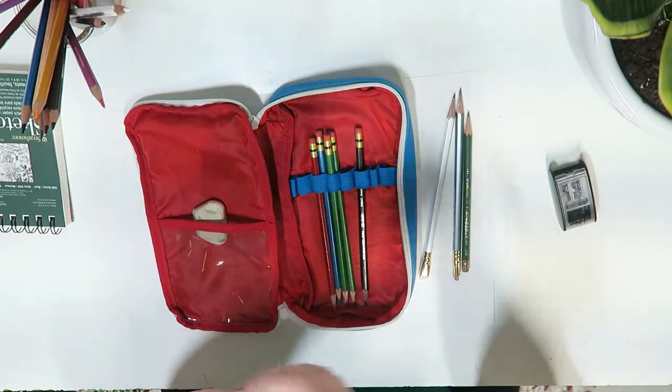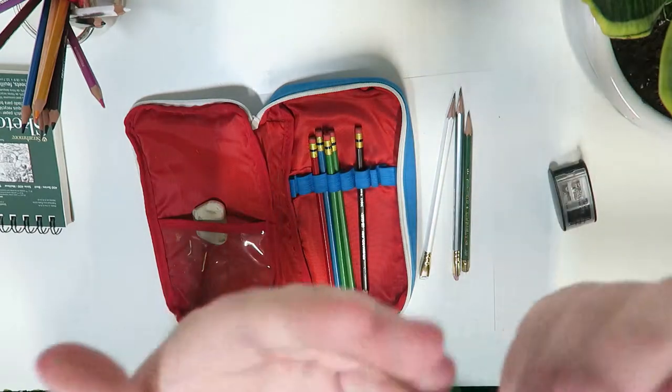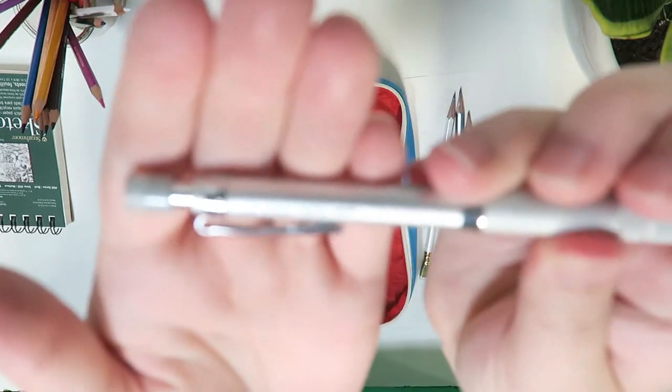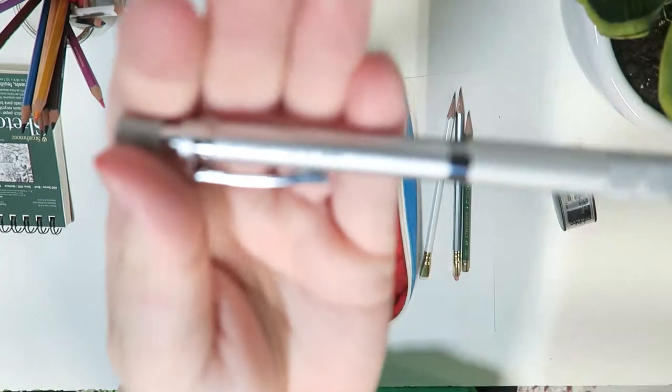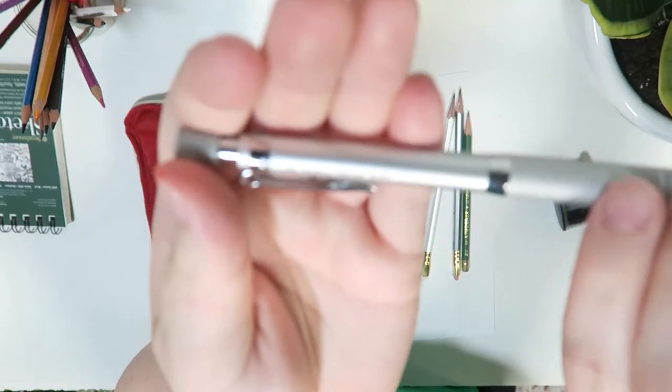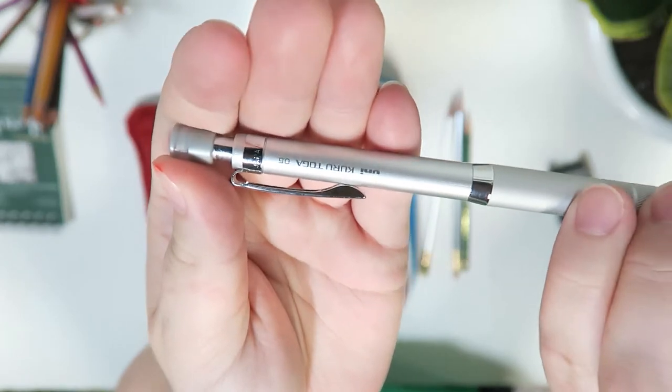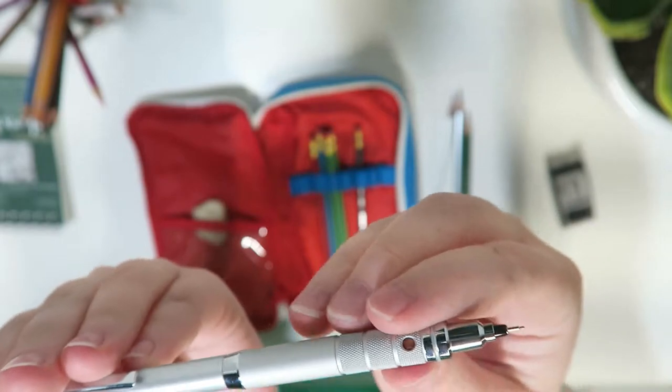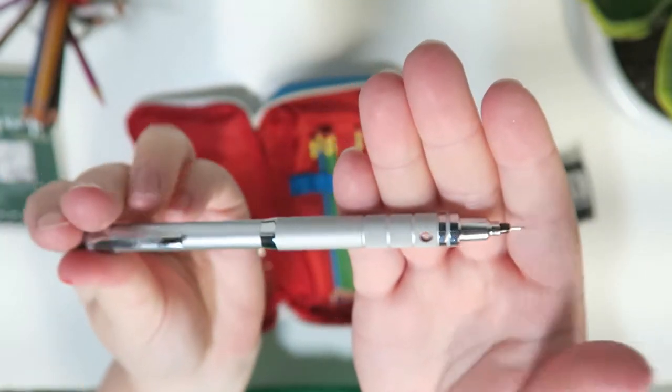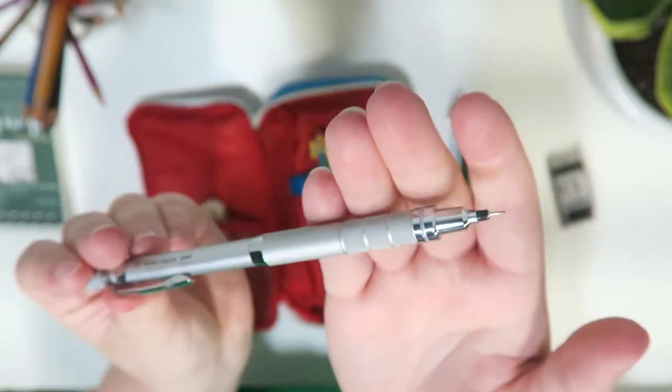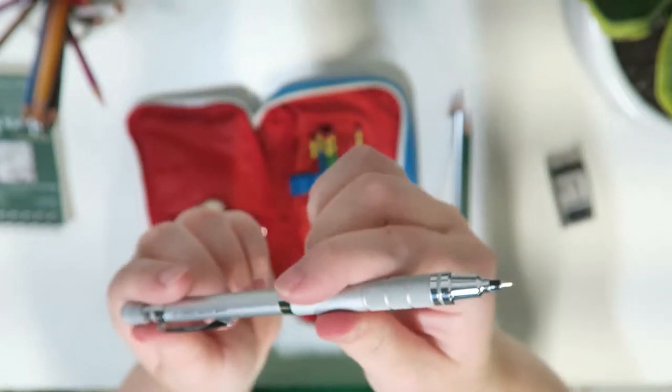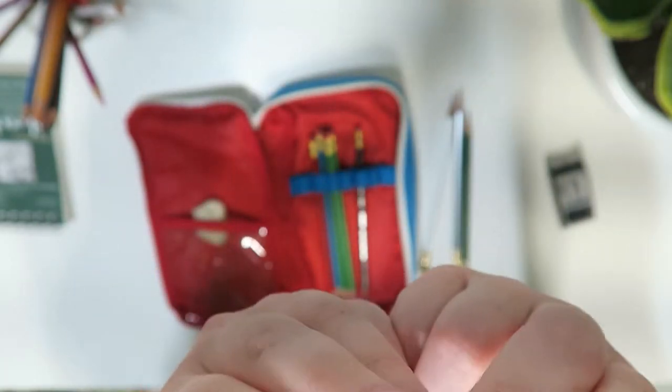Next is one of my new favorites, and I mean new-new. I've just gotten this little guy maybe a week and a half ago, but it has quickly become an essential part of my art practice now. And that is the UniKuru Toga 0.5 Mechanical Pencil. Now, I am not a mechanical pencil person, never have been, but this guy is awesome. It has a little rotator in the pencil itself that actually helps to rotate the lead as you're using it, which keeps the point sharp when you need it.